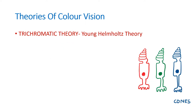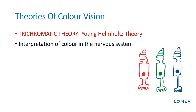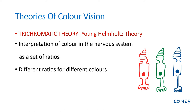According to trichromatic theory, colors are interpreted as a set of ratios. For each color, there will be different proportions of cone activation. For example, for orange, a specific percentage of red cones, green cones, and blue cones are activated. Based on the proportion of the cones activated, different colors are produced.